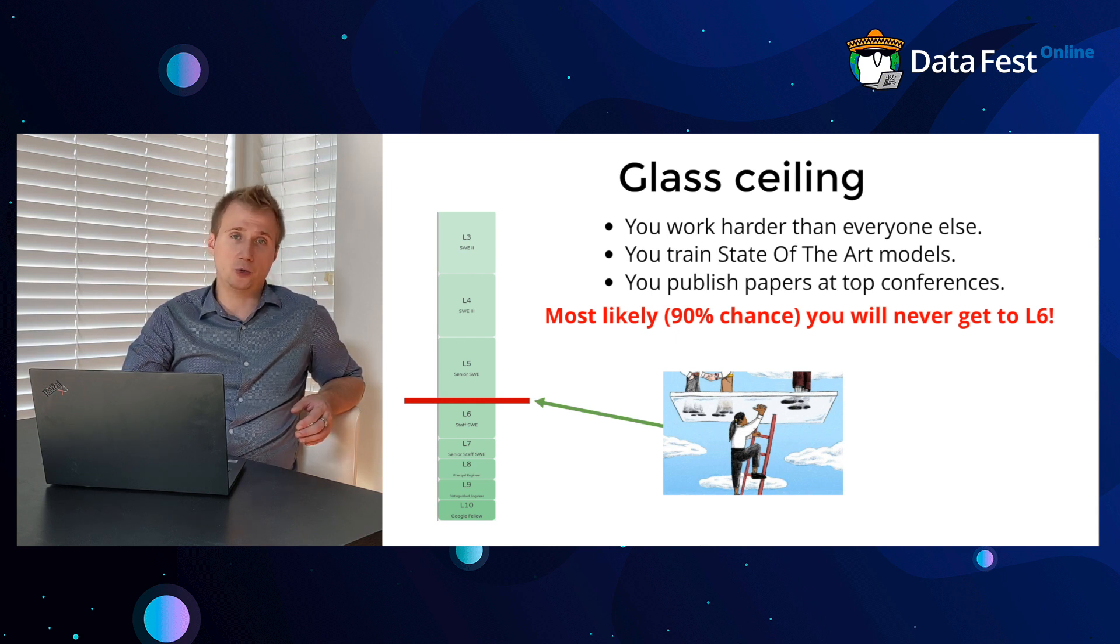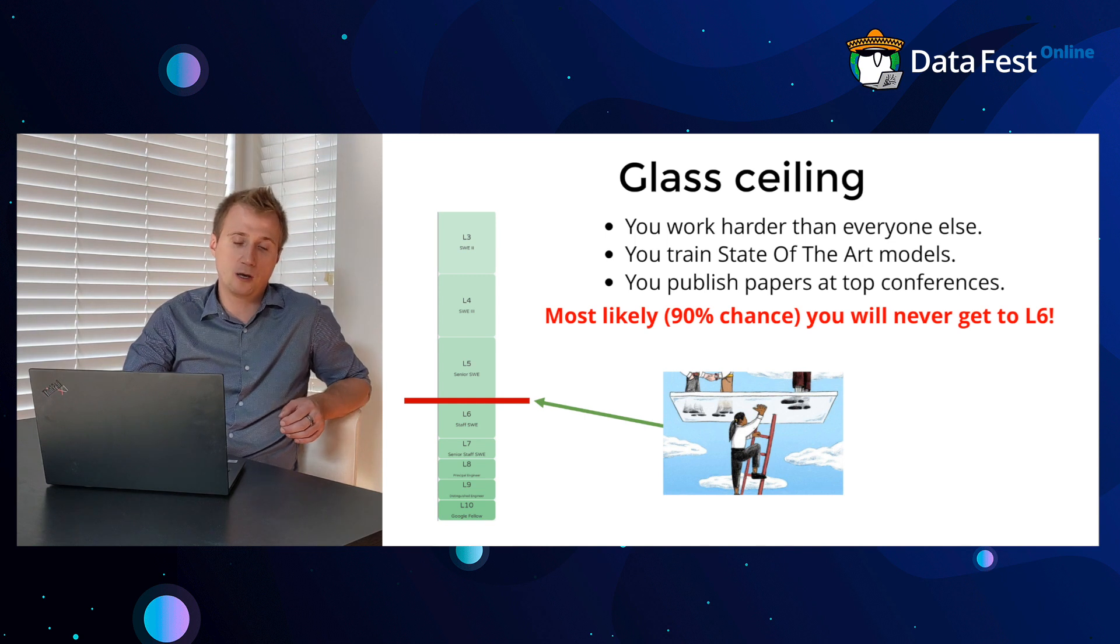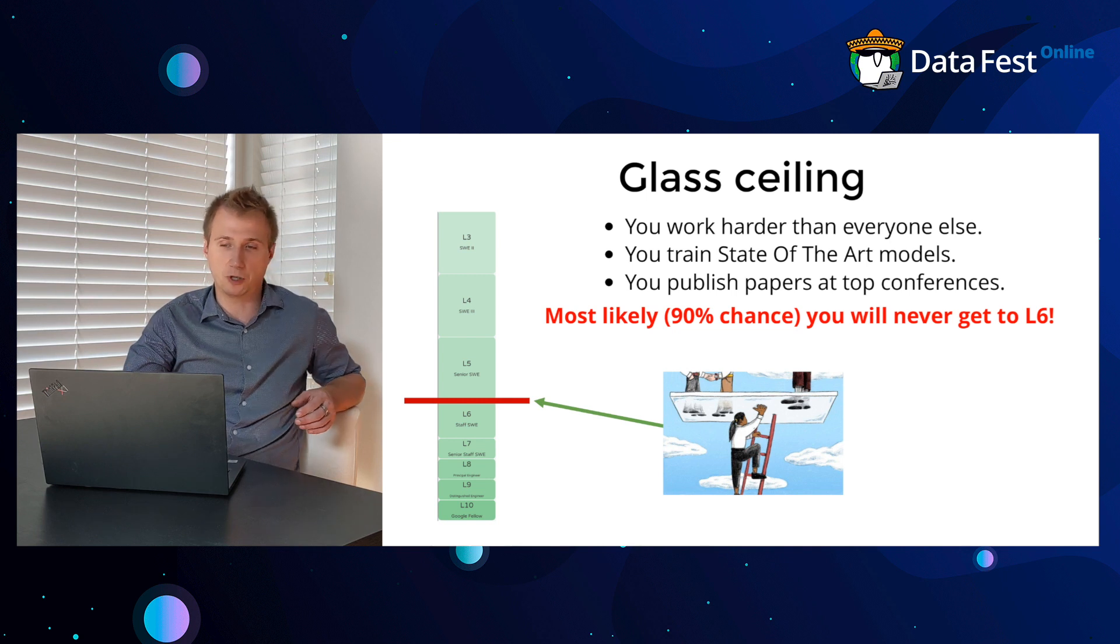If you work hard and you are impactful and the performance committee and your manager believe that you are doing well, you can go from one level to another. This means more impactful, more interesting projects, more responsibilities, and also more money. Every jump is about a hundred thousand dollars in total compensation.